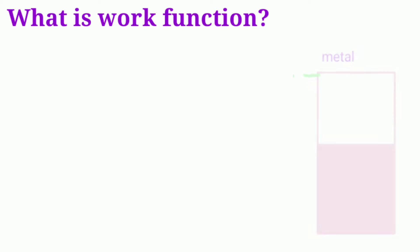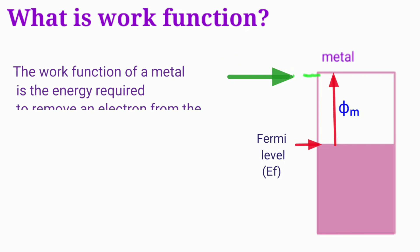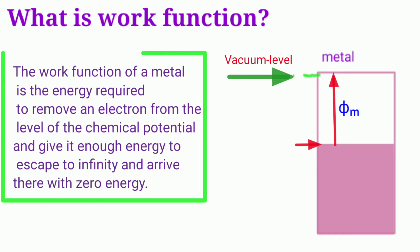The work function of a metal is the energy required to remove an electron from the level of the chemical potential and give it enough energy to escape to infinity and arrive there with zero energy. This is represented by the vacuum level. The work function is denoted by the symbol Phi.